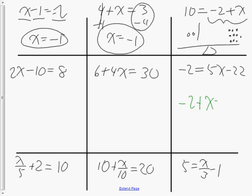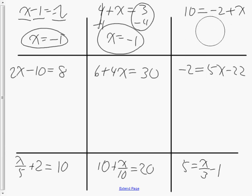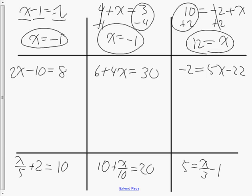So now what I have is negative 2 plus x equals 10, or equivalently x minus 2 equals 10. I'm going to add 2 to both sides to get rid of that negative 2 constant, isolating x. Over here I have the sum of 10 and 2, which is 12. I can read that as x equals 12, or 12 is the value of x.